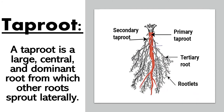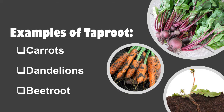Do you know, there are many kinds of roots. I am going to explain two. Number one: taproot. A taproot is a large, central and dominant root from which other roots sprout laterally. Examples of taproot include carrots, dandelions, and beetroot. From the picture, you can easily see one dominant root.